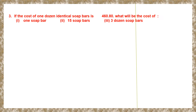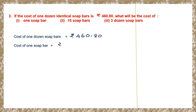Question 3. If the cost of one dozen identical soap bars is 460 rupees and 80 paisa, what will be the cost of: first, one soap bar; second, 15 soap bars; and third, three dozen soap bars. The cost of one dozen soap bars is given as 460 rupees and 80 paisa. To find the cost of one soap bar, we divide by 12, because one dozen means 12. So, here we divide by 12.